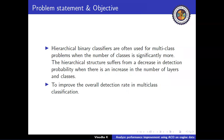The problem statement focuses on the multi-class problem. Hierarchical binary classifiers are often used for multi-class problems when the number of classes is significantly more. The hierarchical structure suffers from a decrease in detection probability when there is an increase in the number of layers and classes. To illustrate with an example, when we have a multi-class dataset, the root classifier may have classes 1, 2, 3, 4, and so on, each with subsequent subclasses.